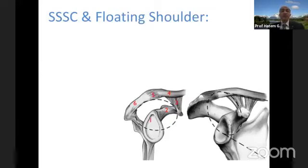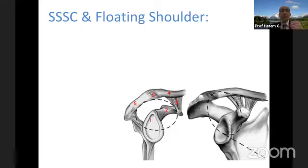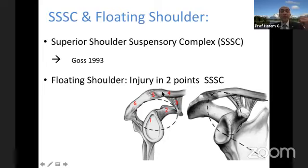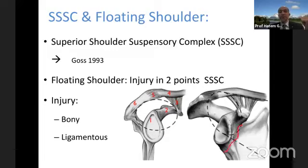Beyond the scapula, the rest of the shoulder complex is called the superior shoulder suspensory complex, described by Goss. It describes the whole chain holding the scapula and shoulder connected: the glenoid, coracoid, coracoclavicular ligaments, clavicle, AC joint, and acromion. If you break two of those structures — bony or ligamentous — that is the floating shoulder concept. All these fractures or ligamentous injuries can be described as a superior shoulder suspensory complex injury.